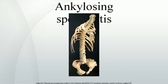Ankylosing spondylitis, previously known as Bechtoureuse disease and Marie-Strompelle disease, is a chronic inflammatory disease of the axial skeleton with variable involvement of peripheral joints and non-articular structures.